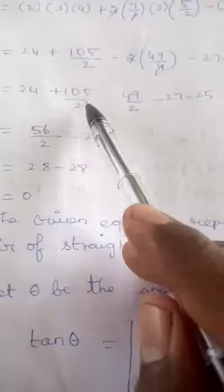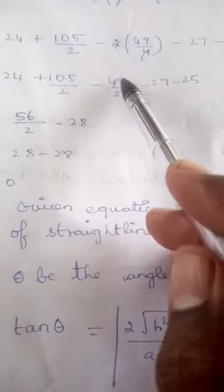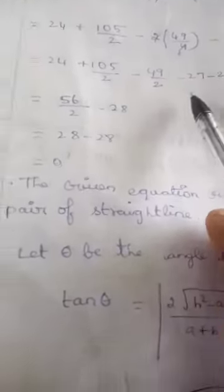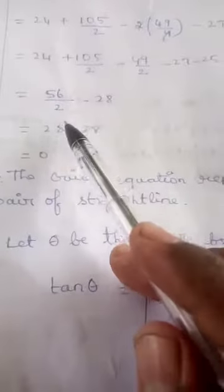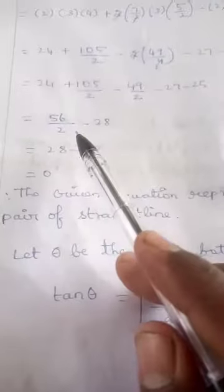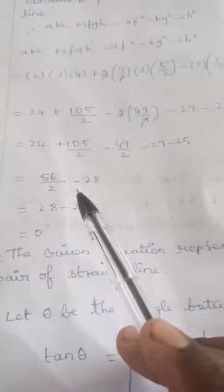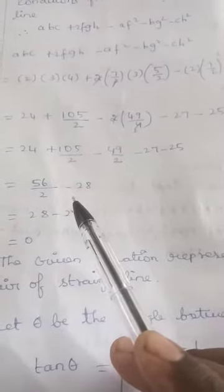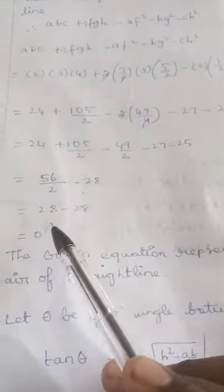Continuing: 28 - 28 = 0. Since abc + 2fgh - af² - bg² - ch² = 0, the given equation represents a pair of straight lines.